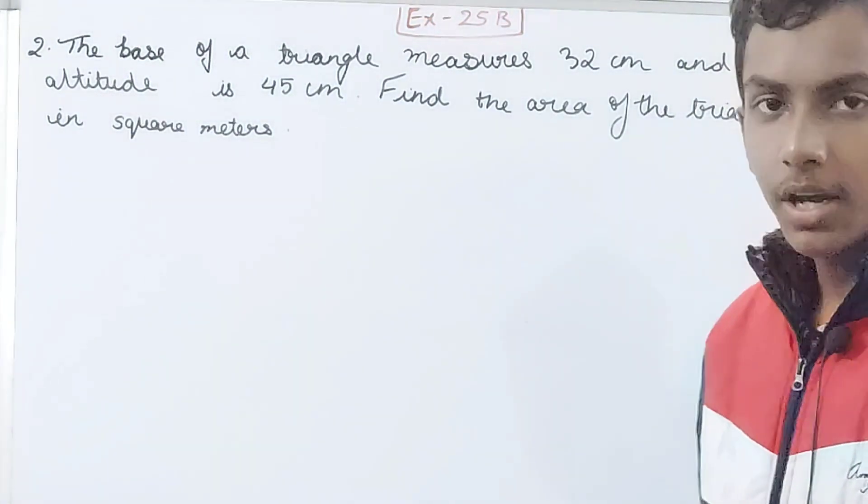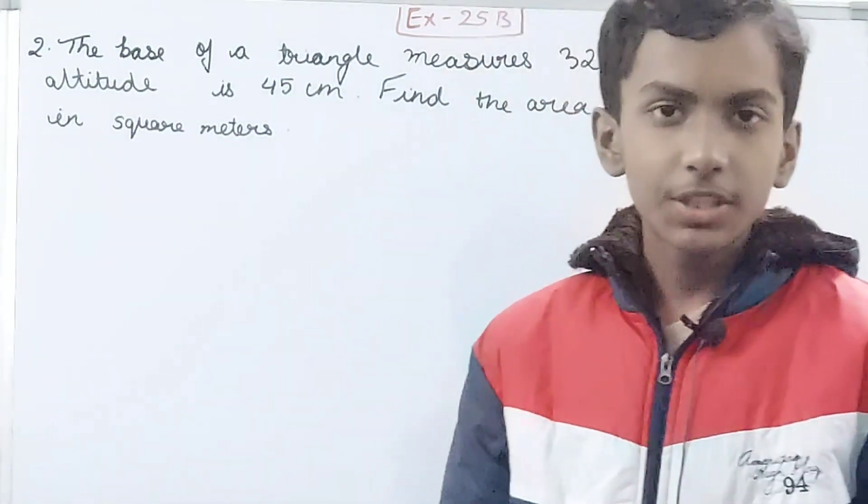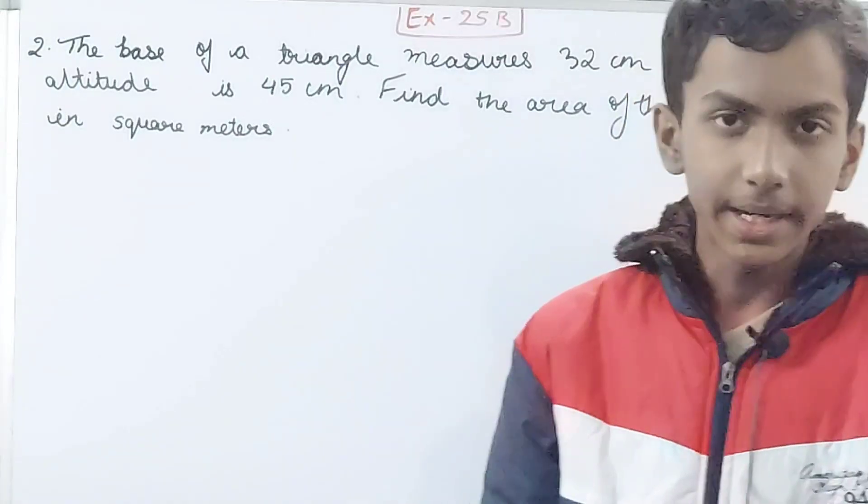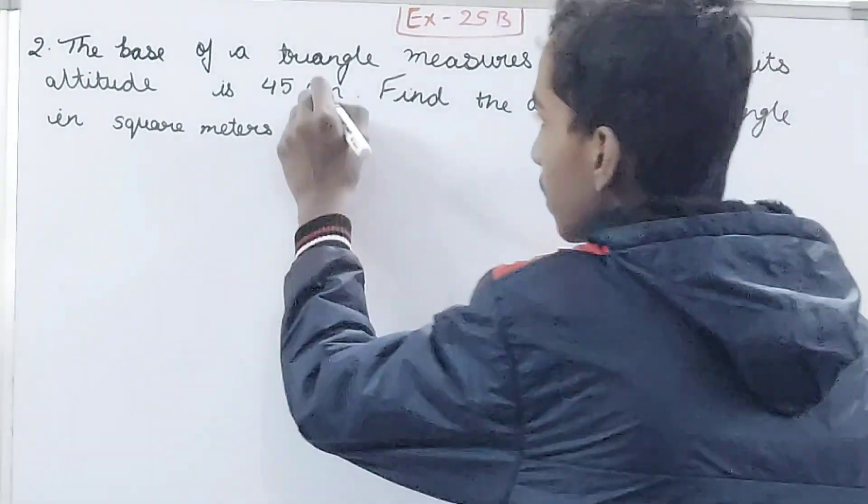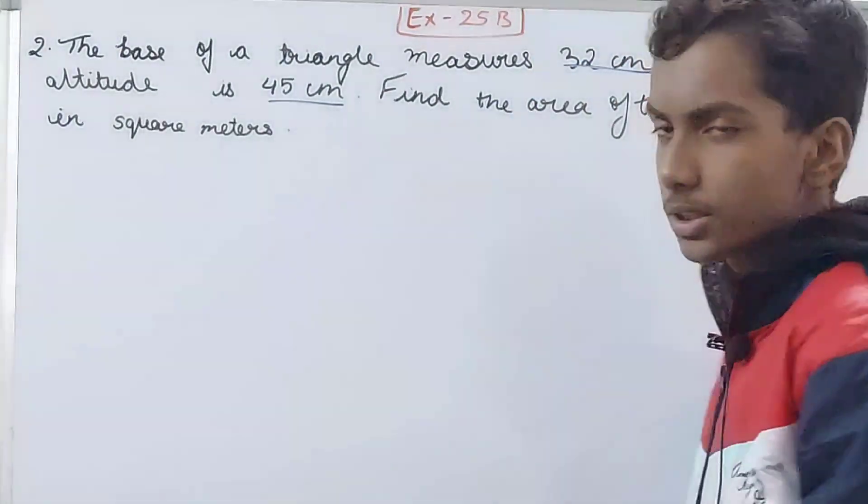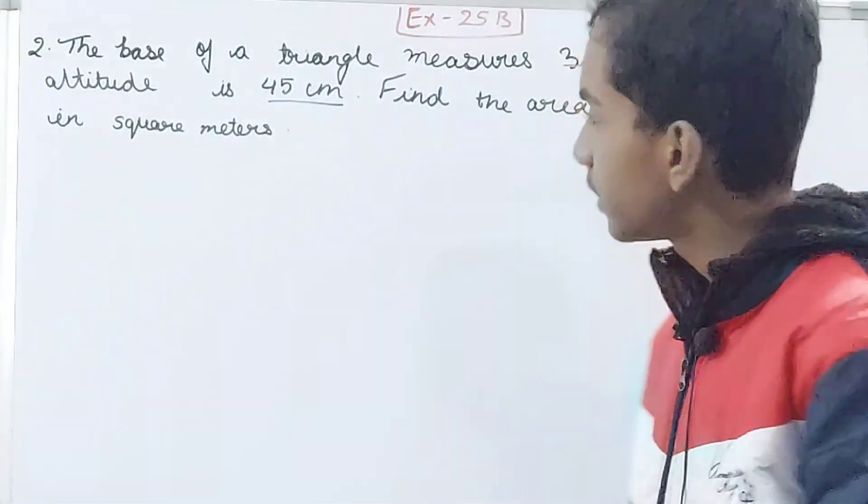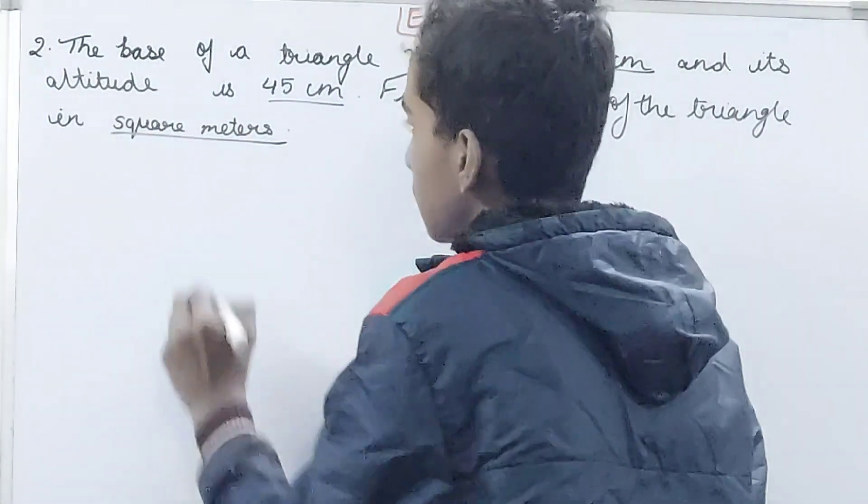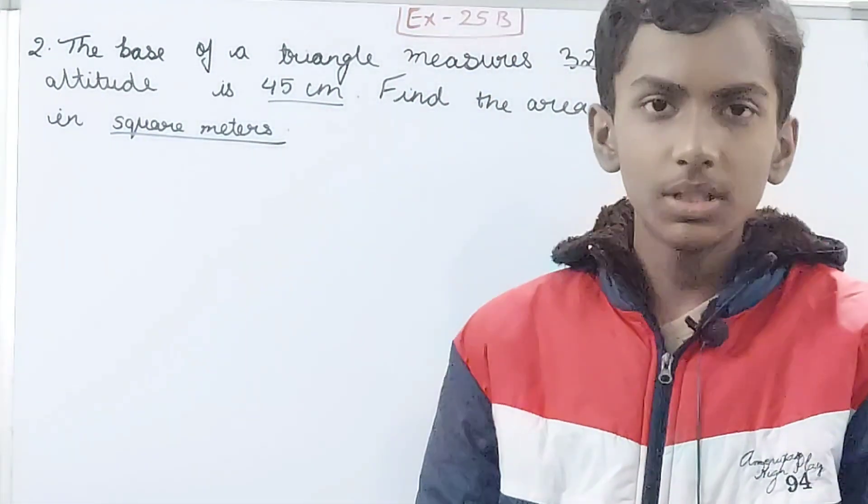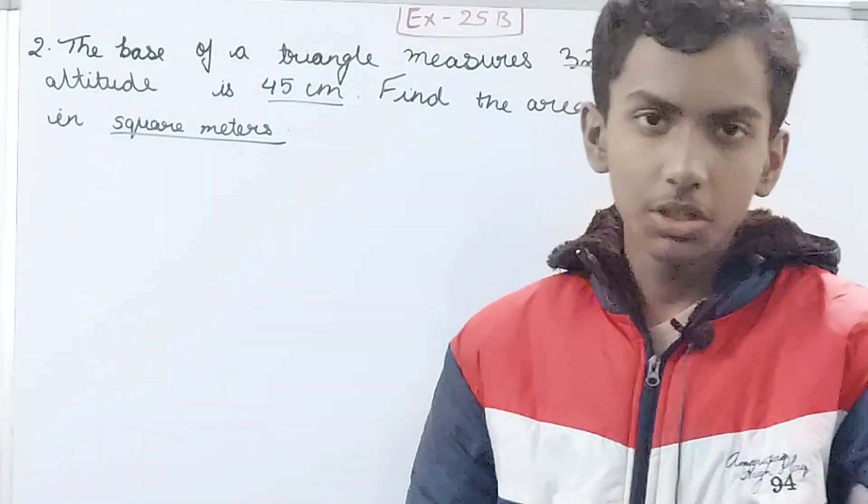We all know area of the triangle is half base into height, or 1/2 × base × height. Here, the altitude is in centimeters, base is in centimeters—32 and 45 centimeters—and it asks to find the area of the triangle in square meters. So square meters means we have to change the unit.